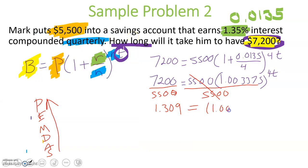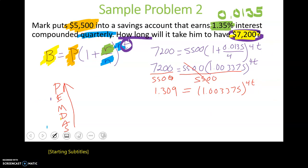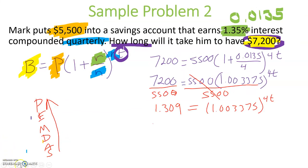This is equal to 1.003375 to the power of 4T. And I totally understand that it's a little tedious to write these numbers, but we are going to write them as is, because we want to guarantee the accuracy. All right, so now we're going to take the common logarithm of both sides in order to remove that power, that variable power. So I am going to take the log base 10, or just log, of the 1.309 and our 1.003375 to the power of 4T.